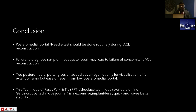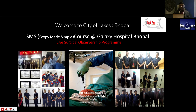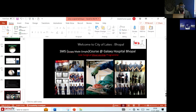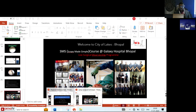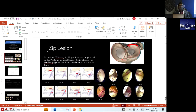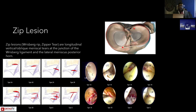Ramp lesions are on the posteromedial side. Good probing is essential in almost all cases — always go into the posteromedial compartment whether the ACL is torn or not. Learn to do the needle test, and then depending on your choice of fixation, if the ramp is unstable, go ahead and fix it. On the lateral side, the equivalent lesion is not called a ramp — it is termed a ZIP lesion. ZIP lesions are visible once you are in the posteromedial compartment.